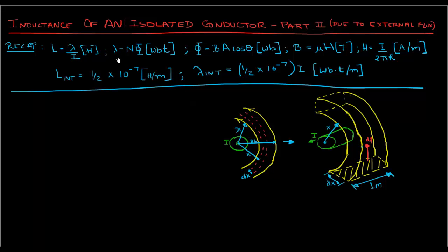We defined flux linkages λ equal to N times Φ, where N is the number of turns, and finally reached our formula for inductance itself: λ over I, with unit Henry. In the last video we derived λ_internal — the magnetic flux linkage due to flux internal to the conductor — and noticed it's not dependent on the radius at all. The value we got was (1/2)×10⁻⁷ times I, giving an inductance due to internal flux of (1/2)×10⁻⁷ H/m, which you simply multiply by the length of your conductor.